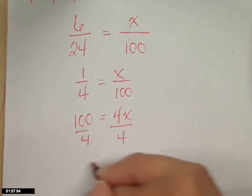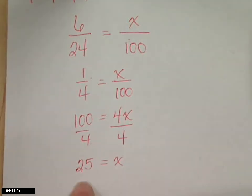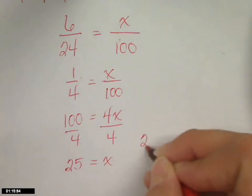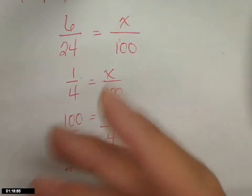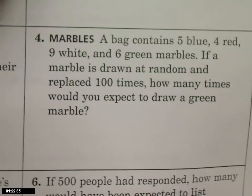Four goes into a hundred how many times? 25. So 25 is what? What does that mean? How many times drawn? Yes. Expected to draw green. Yeah, you would expect to draw green 25 times.